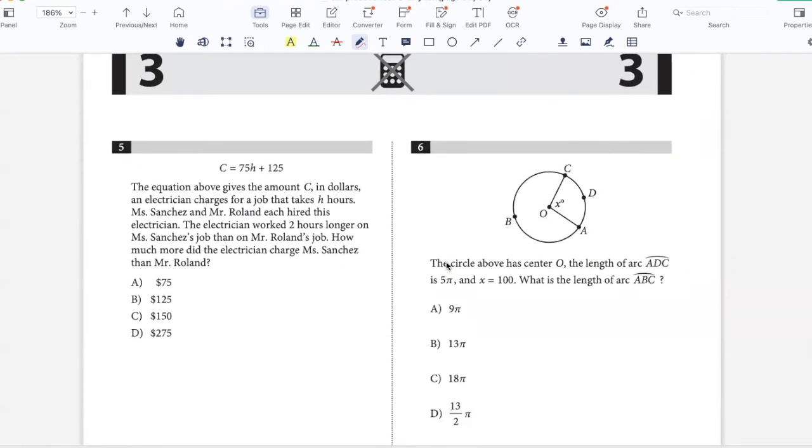The equation above gives the amount C in dollars an electrician charges for a job that takes H hours. Ms. Sanchez and Mr. Rowland each hired this electrician. The electrician worked two hours longer on Ms. Sanchez's job than on Mr. Rowland's job. How much more did the electrician charge Ms. Sanchez than Mr. Rowland?